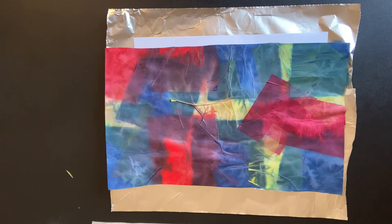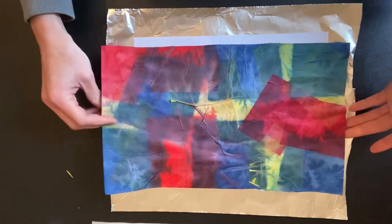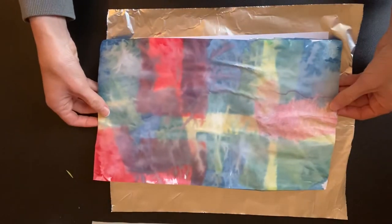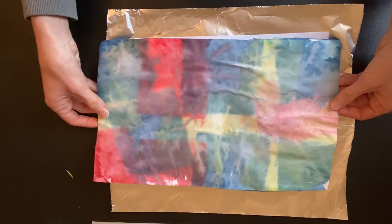Decoupage is when you can take tissue paper or magazine clipping, something of that sort, and use something to bond it to another object. So in this case, kindergarten, first grade, I'm going to bond it to another sheet of paper.